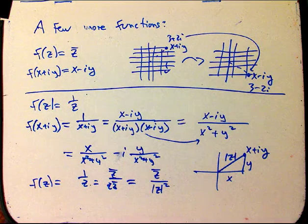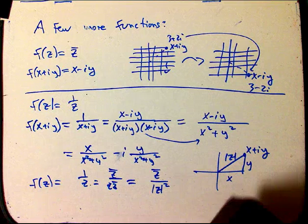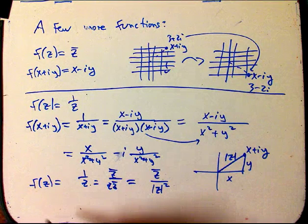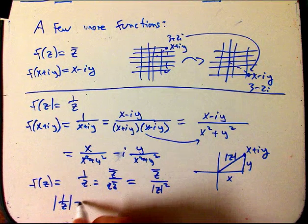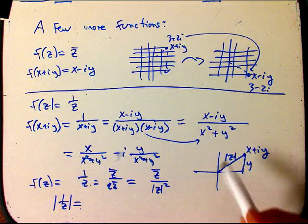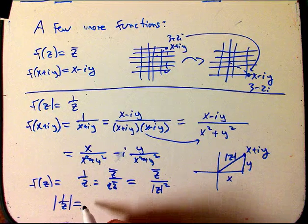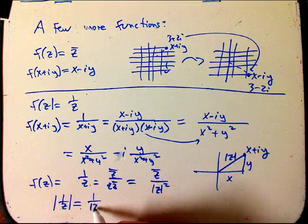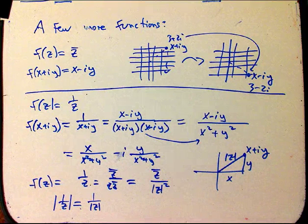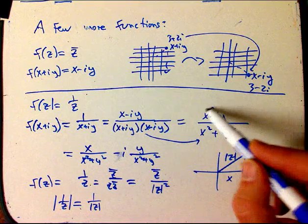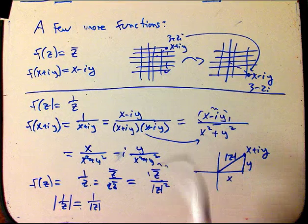So what does that do as a mapping? We've got an algebra for it. Well, one last thing is that the magnitude of 1 over z is not hard to calculate. It's just 1 over the magnitude of z. And there's been a conjugation involved as well, this conjugation.